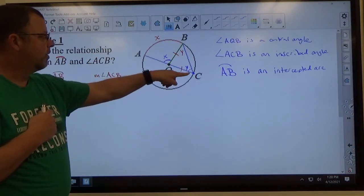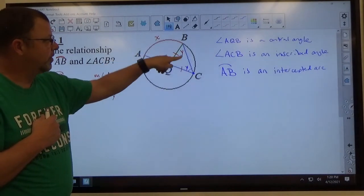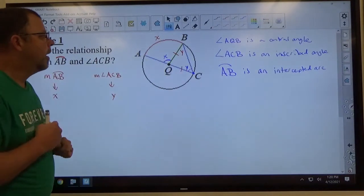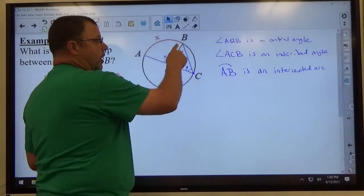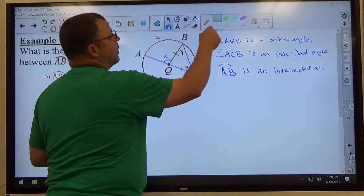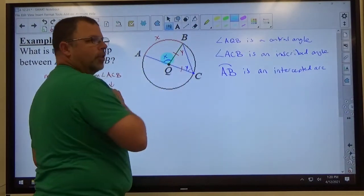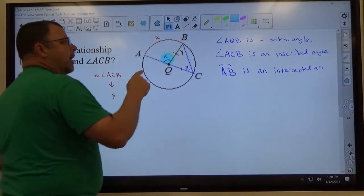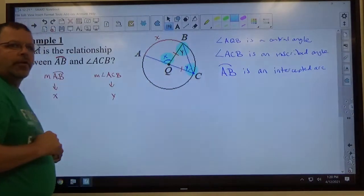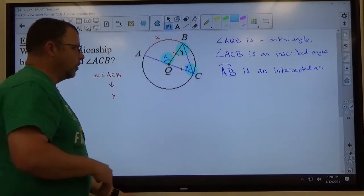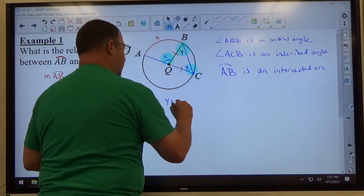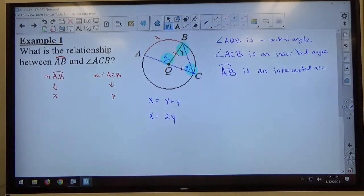So we started off with the arc equaling X, the angle equaling Y. This central angle is the same measure as the arc. This angle over here is the same measure as that angle over there. Now, if you recall back from chapter two or three, we talked about exterior angles versus remote interior angles. The basic idea is if you have any triangle and you extend one of the sides out like this, you create an exterior angle. That's the exterior angle to the triangle BCQ. And these two angles here, angle B and angle C, are called the remote interior angles. And the relationship between the remote interiors versus the exterior is that these two angles add up to that angle. In other words, X equals Y plus Y. Specifically, X equals 2 times Y.